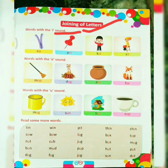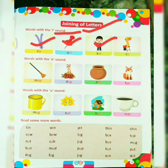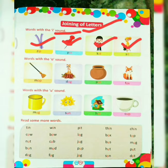The first word is Zip — Z-I-P — Zip. Second word is Pin — P-I-N — Pin. Third word is Kid — K-I-D — Kid. Fourth word is Sit — S-I-T — Sit. Repeat with me: Z-I-P.